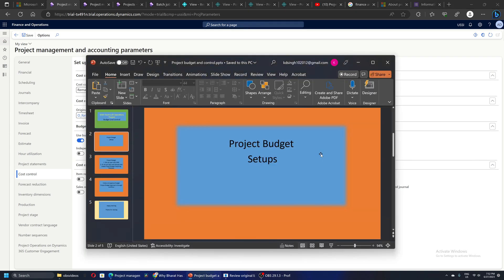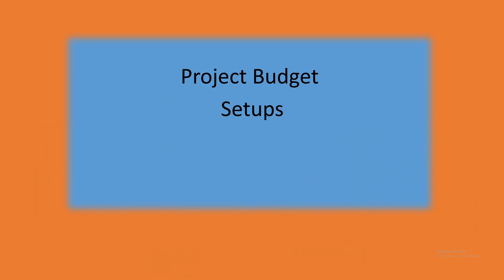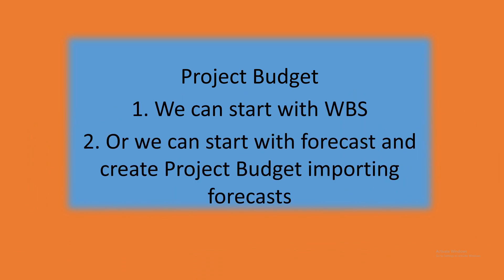After this simple setup is done, for a project the project budget we can start with the WBS which is a Work Breakdown Structure. It is similar to what we have seen in MS Project or Primavera Project - we have activity, sub-activity, sub-sub-activity, so we have a hierarchy of activities with start and end dates, and then we can define resources for each activity.